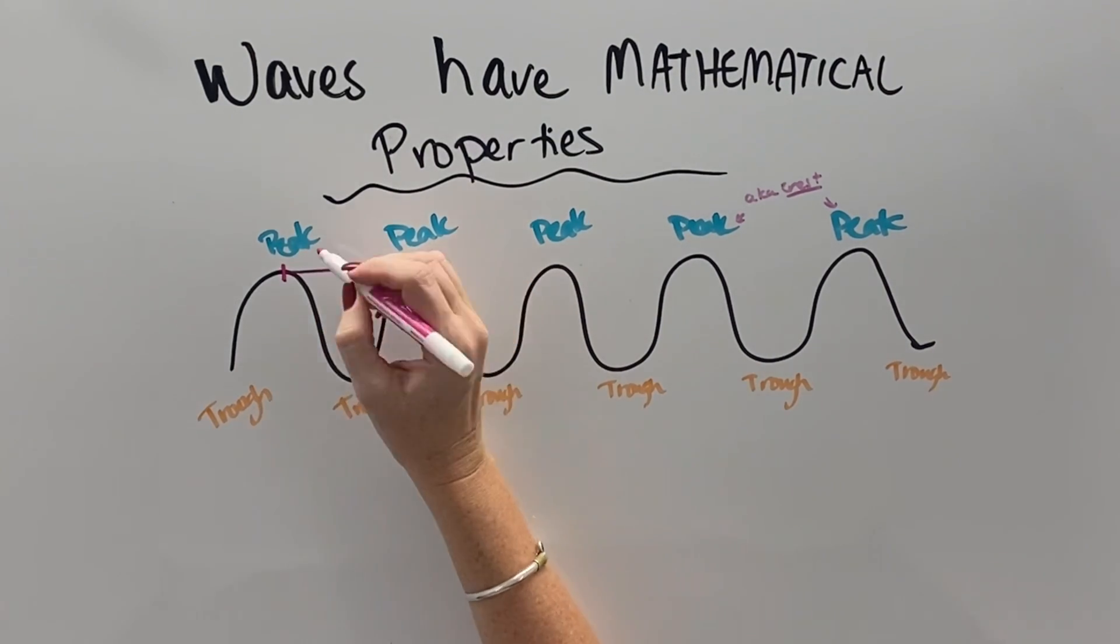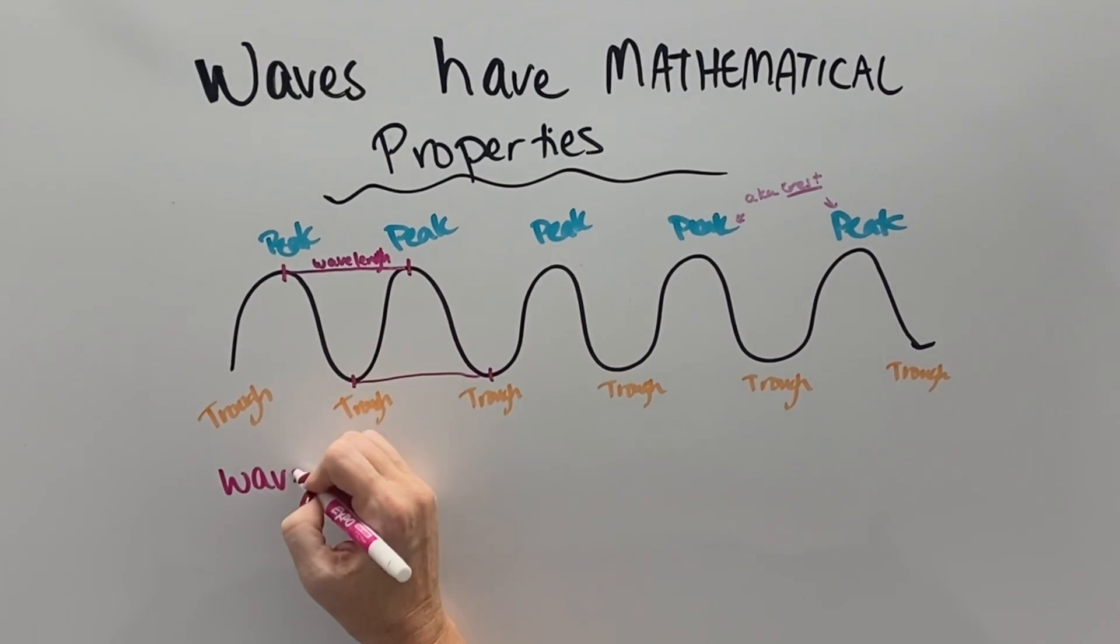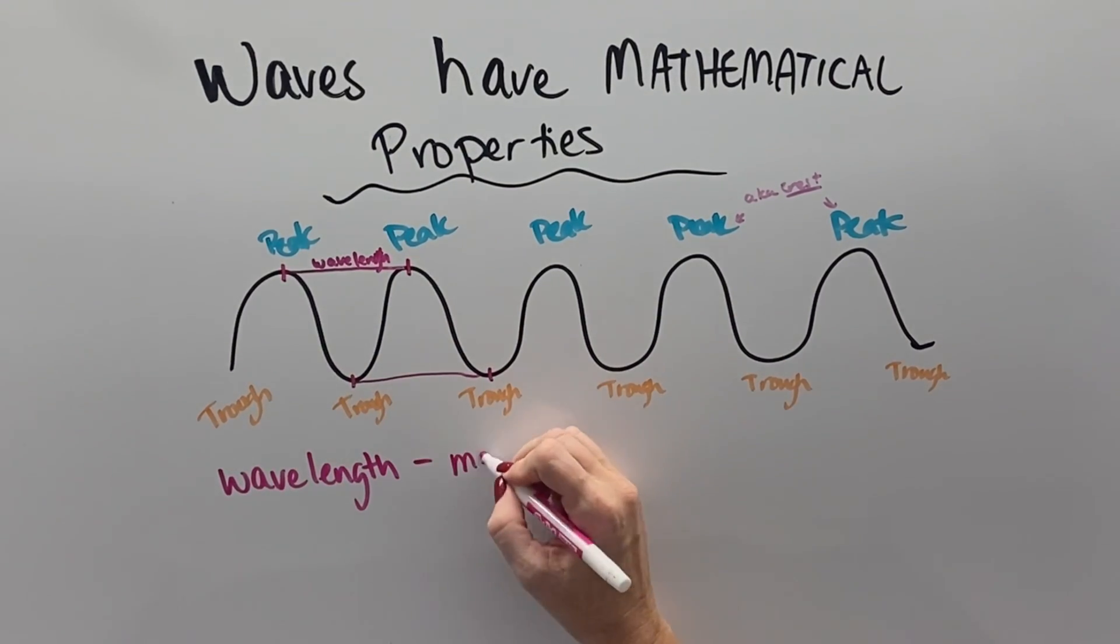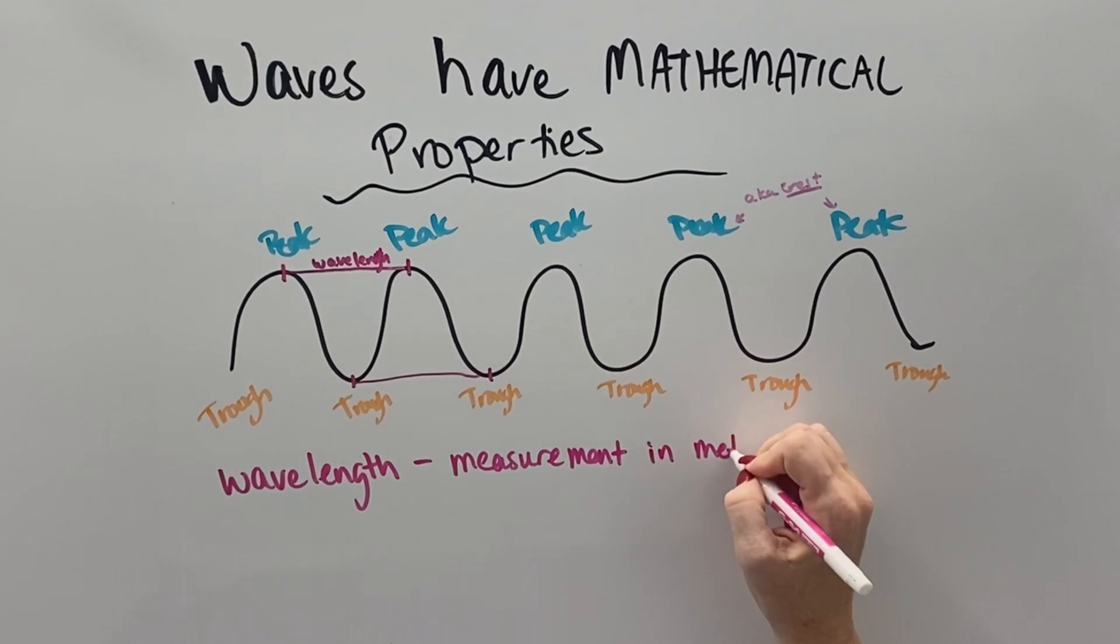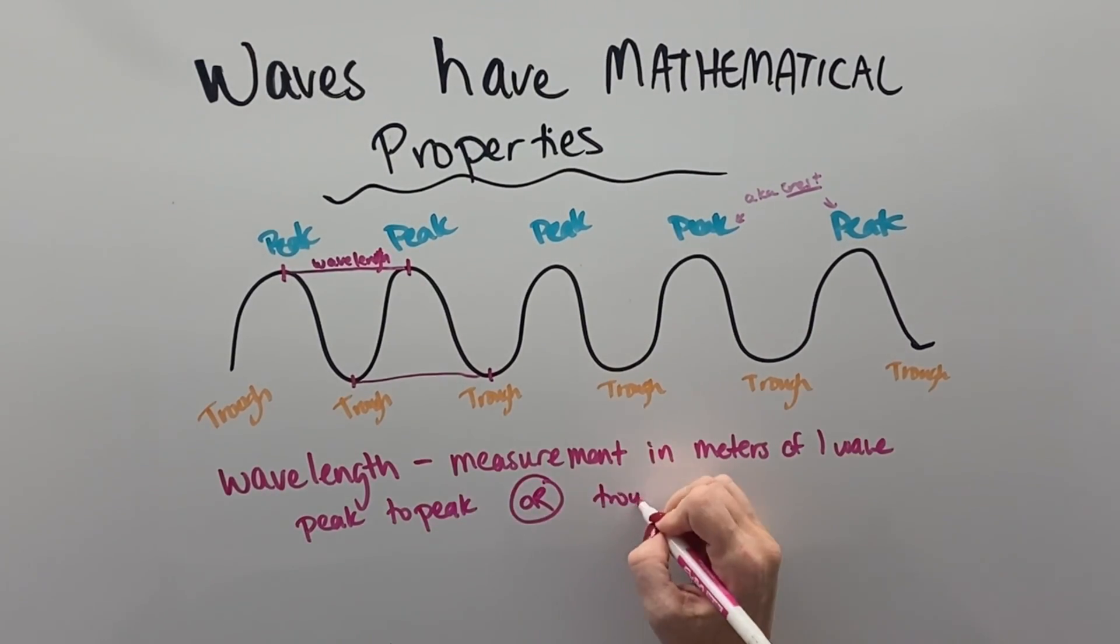So when we look at a wave, we want to look at the pattern from either peak to peak or trough to trough. And this is a thing called a wavelength, basically one full complete wave. And it's measured in meters, how long that wave is.